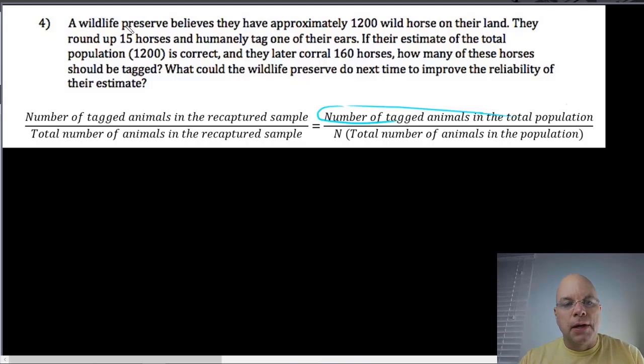Let's read it. A wildlife preserve believes they have approximately 1200 wild horses on their land. So they believe their total population is 1200. I'm actually going to start setting up the proportion right now. They believe the total number of animals in their population is 1200, so that's actually the number that we're usually solving for. They round up 15 horses and humanely tag one of their ears, and so that's the number of tagged animals in the total population, 15.